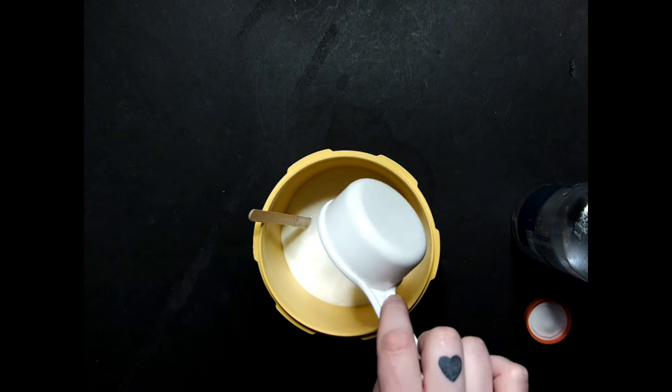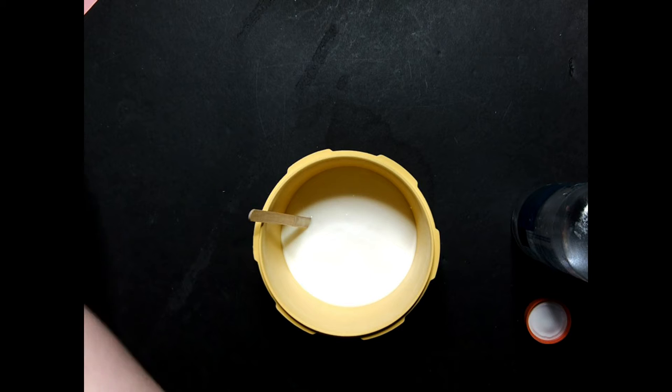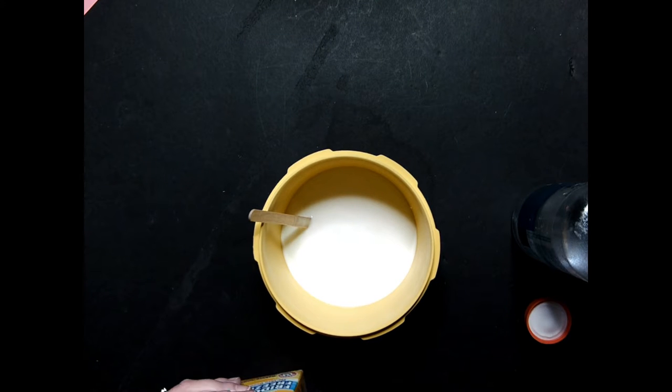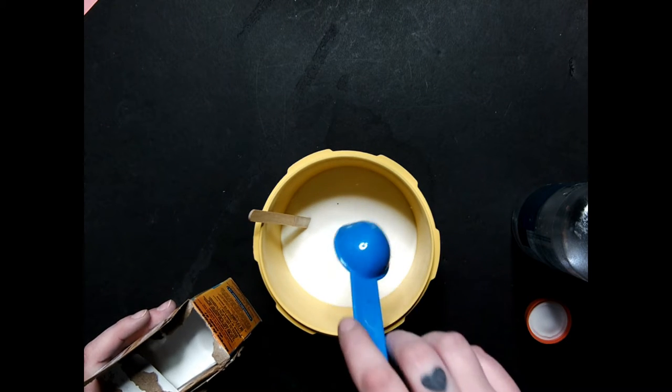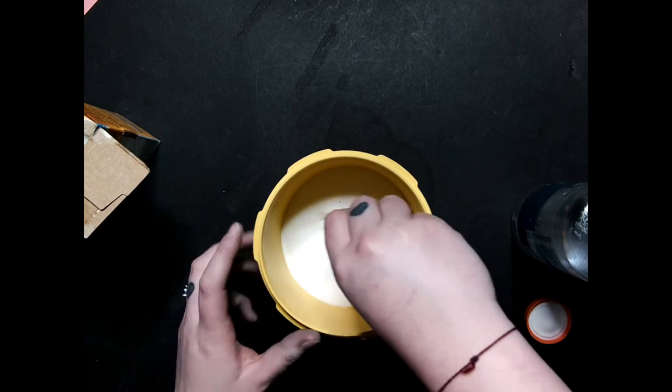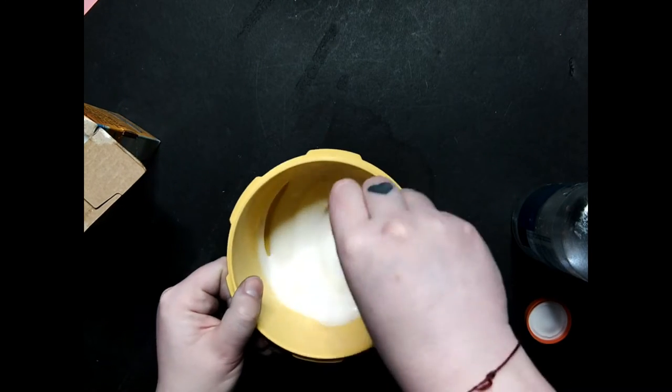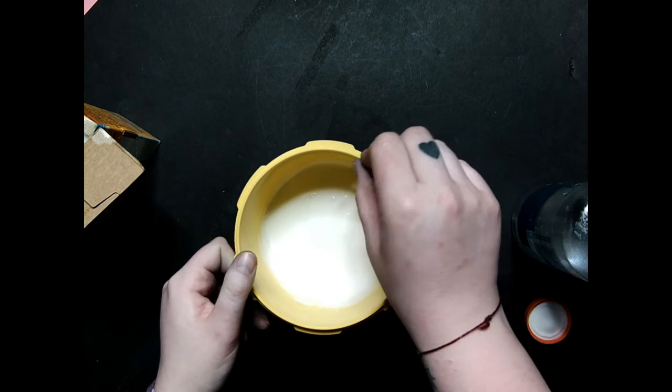Once you've got that in there you can set your measuring cup aside and we're going to grab our baking soda. For this you're going to need about half a tablespoon up to a tablespoon. It really depends on how firm you want your slime. So I've got about half a tablespoon there and I want to sprinkle that in and then we're going to mix it up. We want to get that in there nice and smooth and once we've got that mixed up we can add our food coloring.